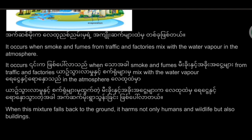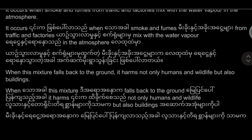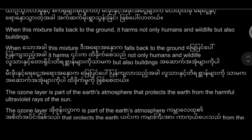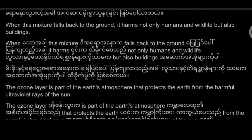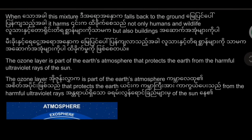Acid rain is one of the consequences of air pollution. It occurs when smoke and fumes from traffic and factories mix with water vapor in the atmosphere. When this mixture falls back to the ground, it harms not only humans and wildlife but also buildings.